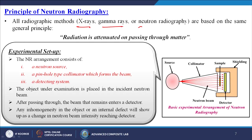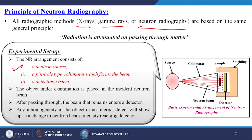All radiography methods — X-rays, gamma rays, and neutron radiography — are based on the same general principle: radiation is attenuated on passing through matter. The experimental NR arrangement consists of a neutron source, a pinhole-type collimator which forms the beam, and a detecting system. The object under examination is placed in the incident neutron beam; after passing through, the remaining beam enters a detector. Any inhomogeneity or internal defect in the object will show up as a change in neutron beam intensity reaching the detector.